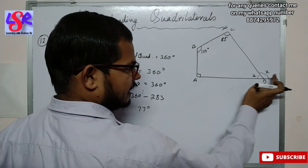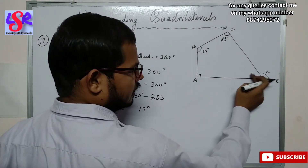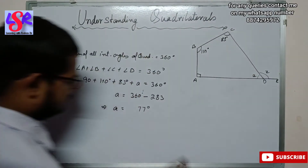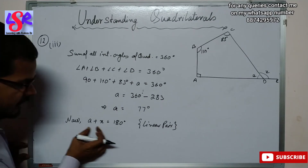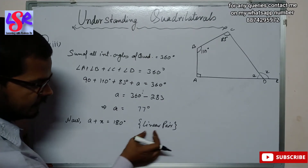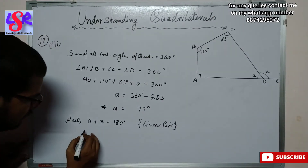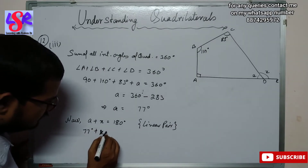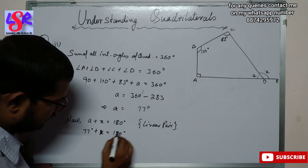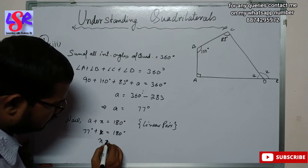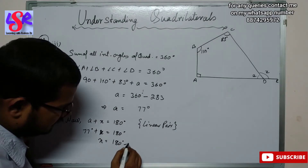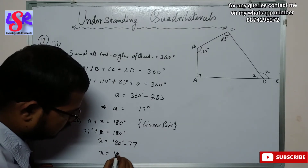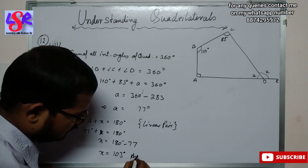We see that A and x are linear pairs. Using the linear pair property, A plus x equals 180 degrees. Placing the value of A: 77 plus x equals 180, so x equals 180 minus 77, giving x equals 103 degrees.